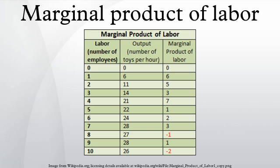The marginal revenue product is the change in total revenue per unit change in the variable input — assume labor. That is, MRPL equals ΔTR/ΔL. MRPL is the product of marginal revenue and the marginal product of labor, or MRPL equals MR times MPL. Derivation: MR equals ΔTR/ΔQ, MPL equals ΔQ/ΔL, MRPL equals MR times MPL equals ΔTR/ΔL.